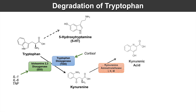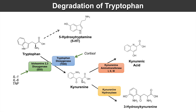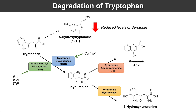Kynurenine can then be metabolized by the enzyme kynurenine aminotransferase 1, 2, and 3 into kynurenic acid. Or it can be metabolized by the enzyme kynurenine hydroxylase into 3-hydroxykynurenine — essentially this enzyme attaches a hydroxyl group to the hydrocarbon ring. Once tryptophan is shunted away from 5-hydroxytryptamine production into this degradation pathway, we've essentially reduced the production and levels of serotonin.